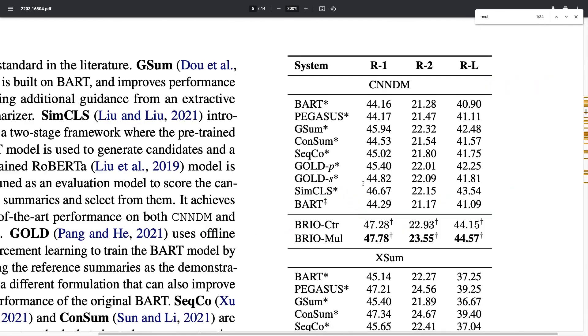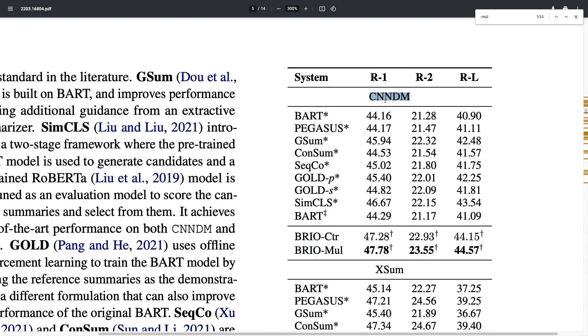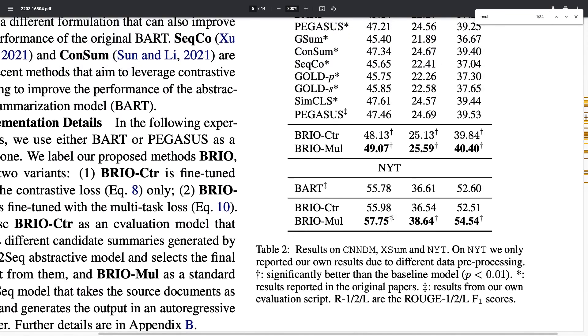Moving to the results, the main finding is that using this non-deterministic training is very effective and leads to significant improvements over baseline systems like BART. These results are on the CNN Daily Mail dataset, a standard benchmark for abstractive summarization based on news articles. We see that the non-deterministic training on its own gives improvements over the baseline, resulting in higher ROUGE scores. If you combine both deterministic and non-deterministic training—the standard MLE plus the new loss function—you get the best trade-off. This is consistent across other datasets like XSUM and New York Times.